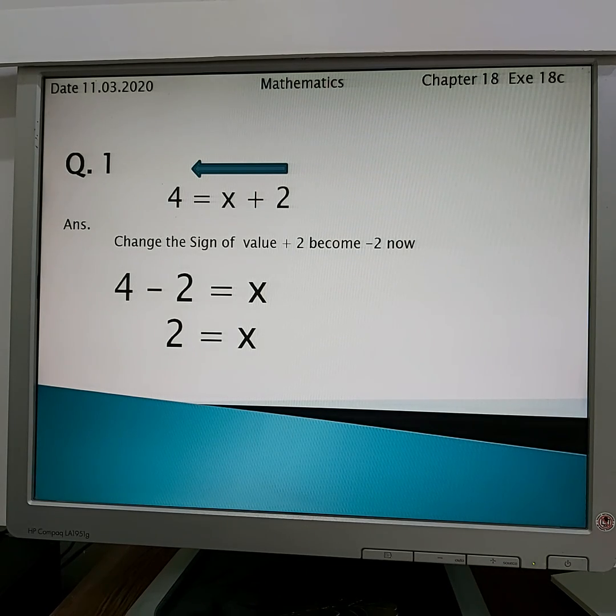The first question of this exercise is 4 equals x plus 2. This is called an equation. Whenever two values are combined together with the equal sign, this is called an equation, and in this equation we need to find the value of x. When you bring this 2 to the other side of the equation it will change the sign. Now 4 minus 2 equals x, which means the value of x is equal to 2.